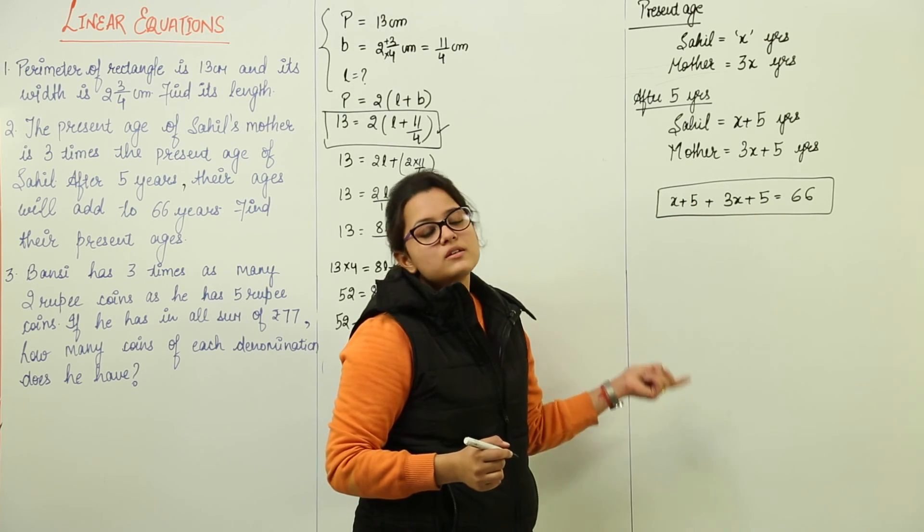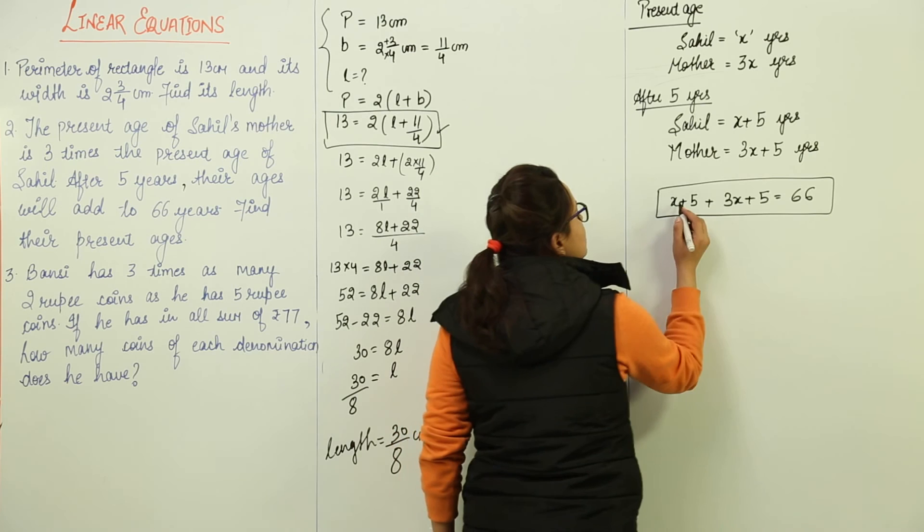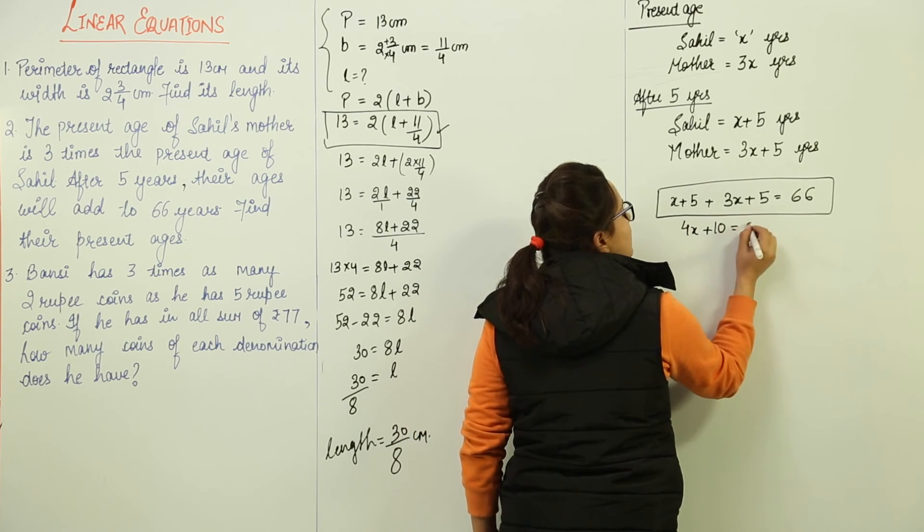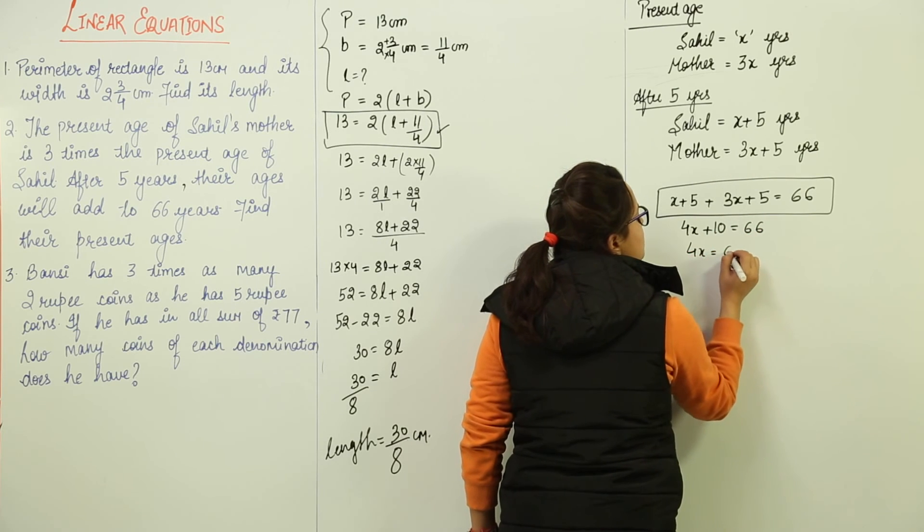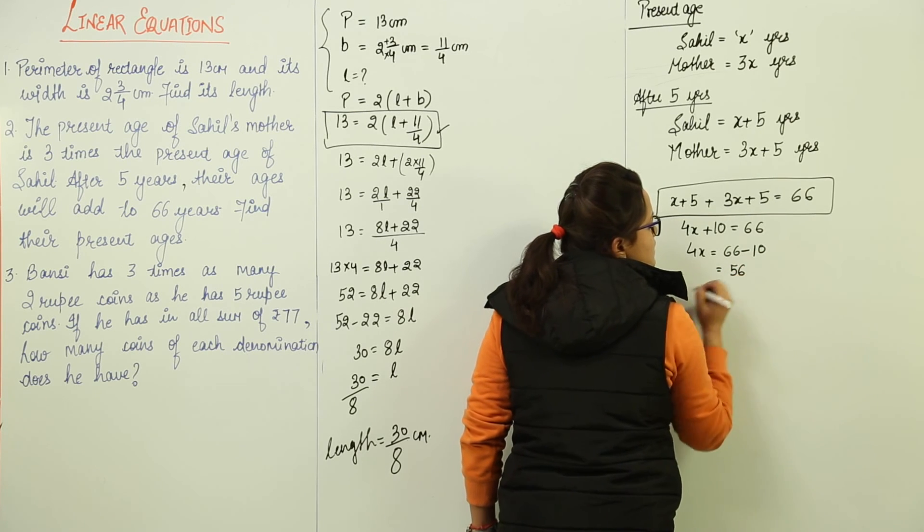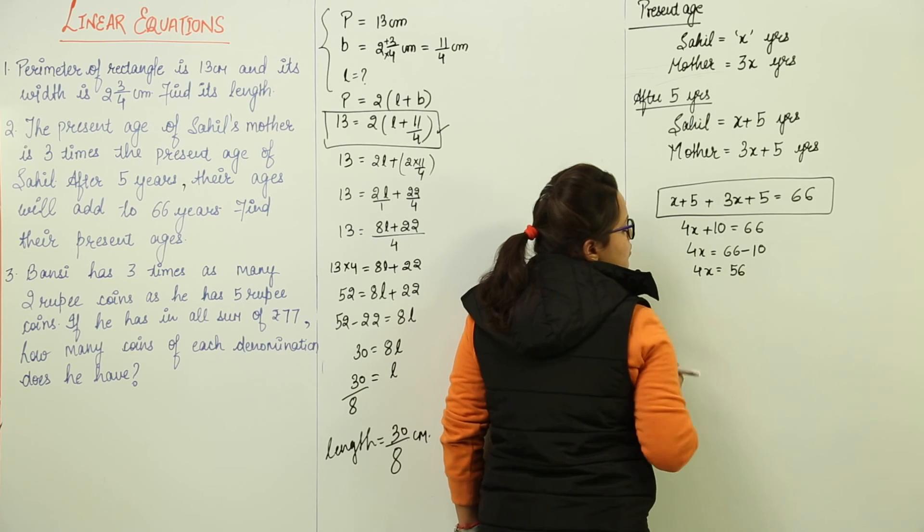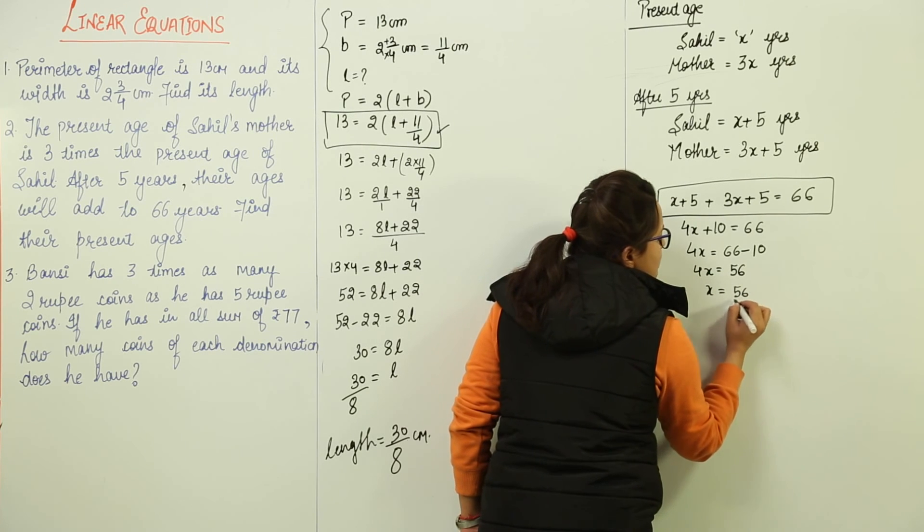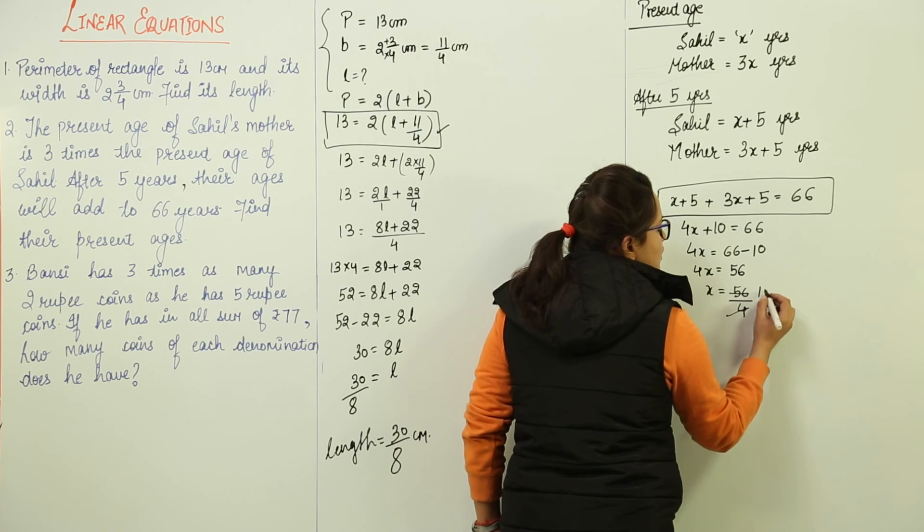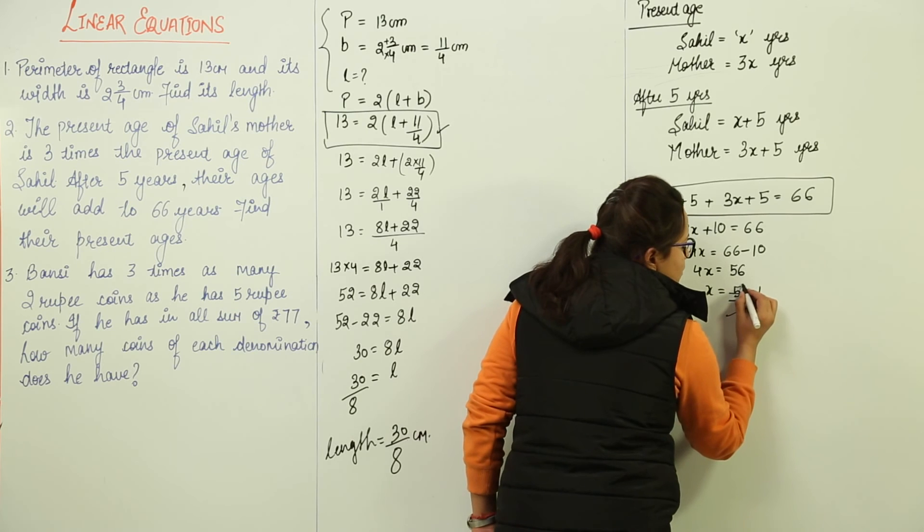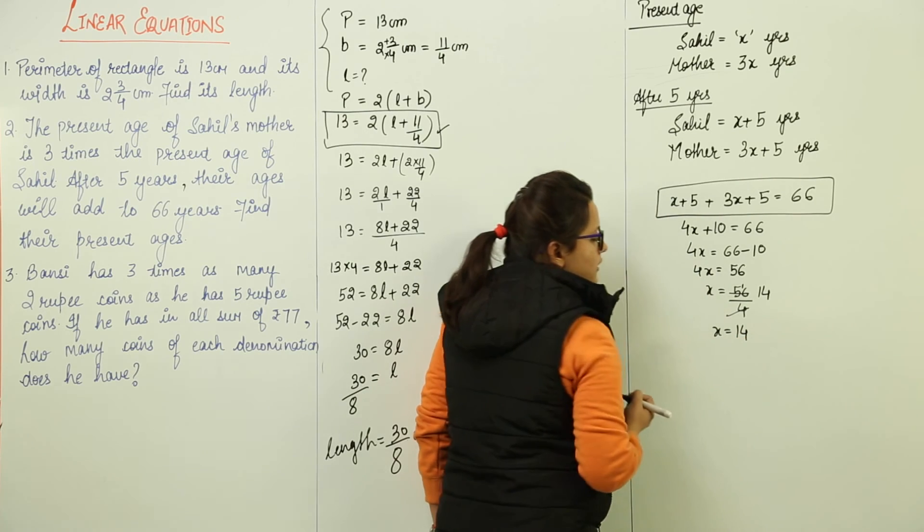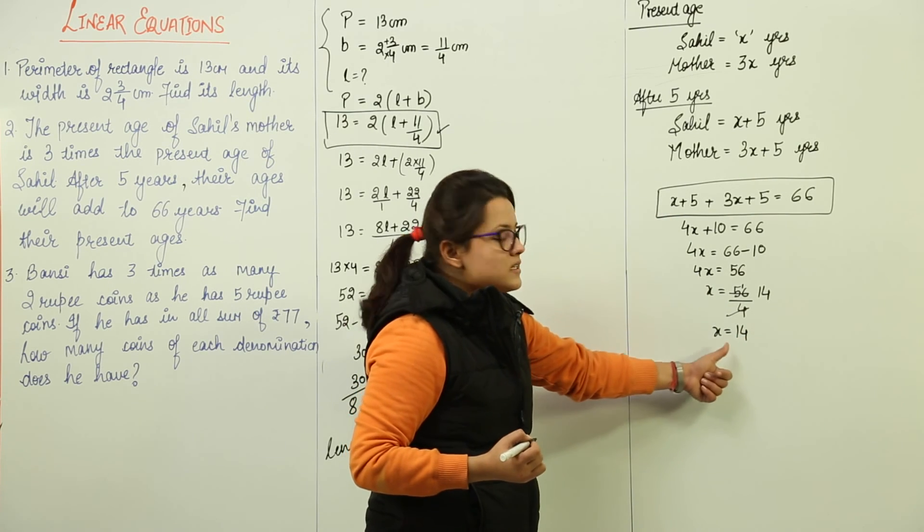The only part left now is solving. X plus 3X becomes 4X plus 5 plus 5 becomes 10. So 4X plus 10 equals 66. 4X is equal to 66 minus 10, which is equal to 56. Now X comes out to be 56 over 4. If you solve this, you get 4 ones are 4, you are left with 16. 4 4s are 16. So X comes out to be 14.